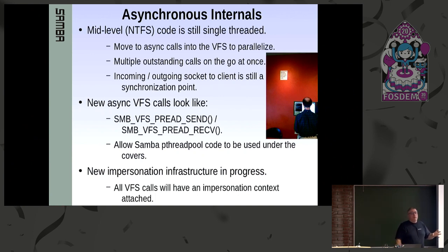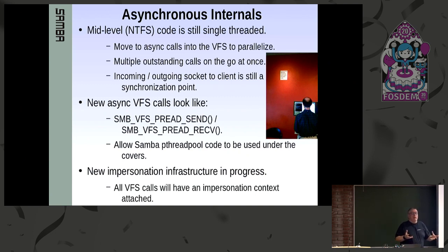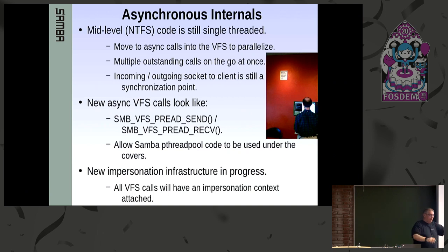Most of our code is still single-threaded, but what we try to do is use send/receive calls to make things asynchronous. We're single-threaded going out the socket because you've got one stream of requests. We are trying to move the VFS so that you can have multiple outstanding calls going on inside Samba simultaneously. Our new calls look like SMB_VFS_PREAD_SEND and SMB_VFS_PREAD_RECV. The control flow comes in, we issue the pread send, go back to our main event loop to do other stuff, and when the read finishes and has filled the buffer, pread recv is called and finishes processing going out on the wire.